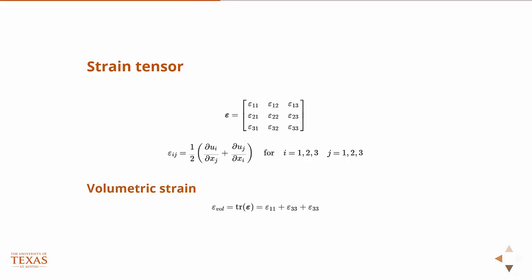Also, just want to note that the volumetric strain — which is a scalar — is the trace of the strain tensor. When we talked about linear algebra, I don't think we talked about trace, but the trace of any matrix is the sum of the diagonals. We'll use this notation sometimes, and we call that the volumetric strain.